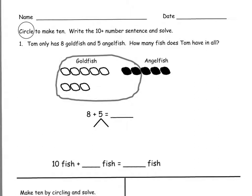Number 1. Tom only has 8 goldfish and 5 angelfish. How many fish does Tom have in all?